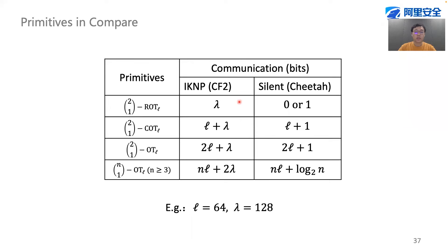This table compares the overhead of OT primitives between CryptoFlow2 and Chita. The major difference is that the security parameter lambda no longer affects the communication overhead, and this is a non-trivial reduction because lambda is generally larger than 128.